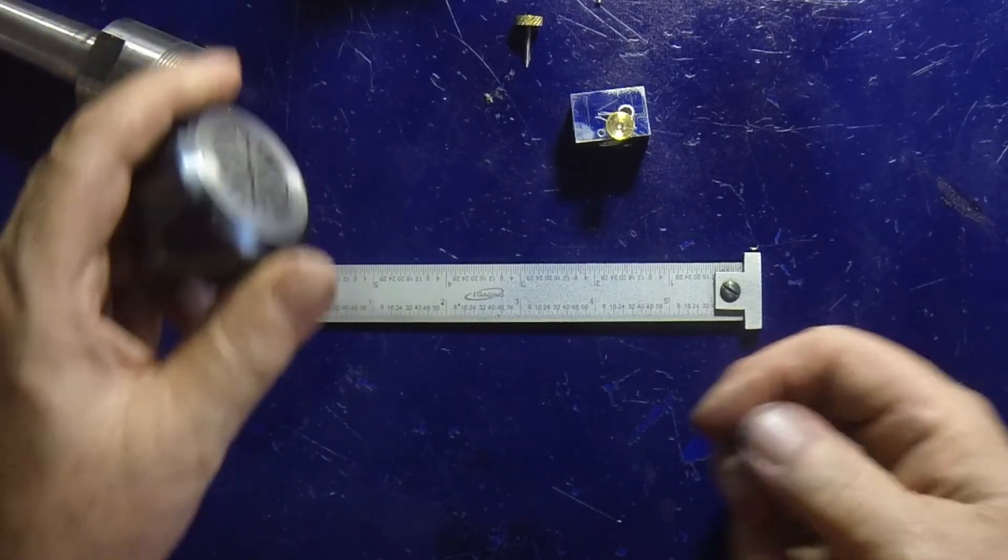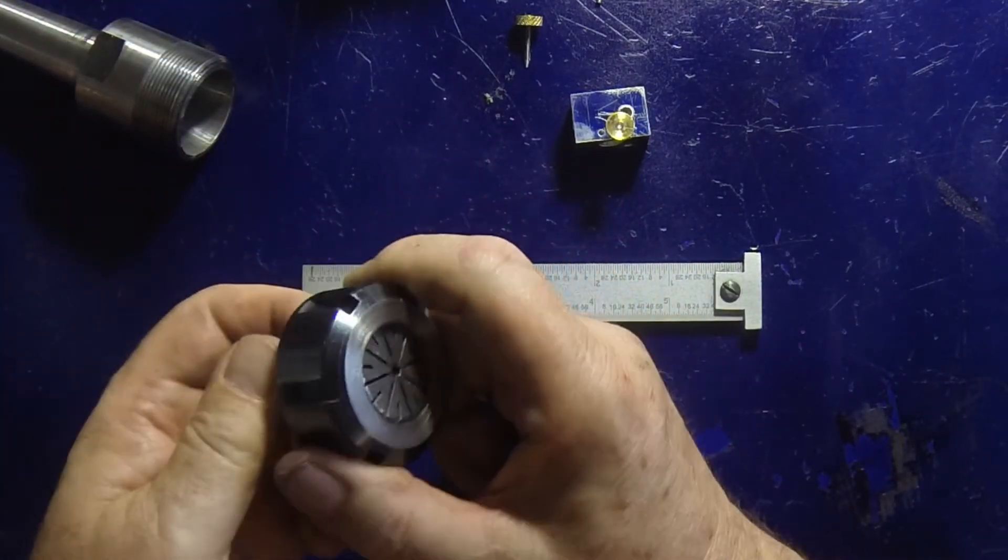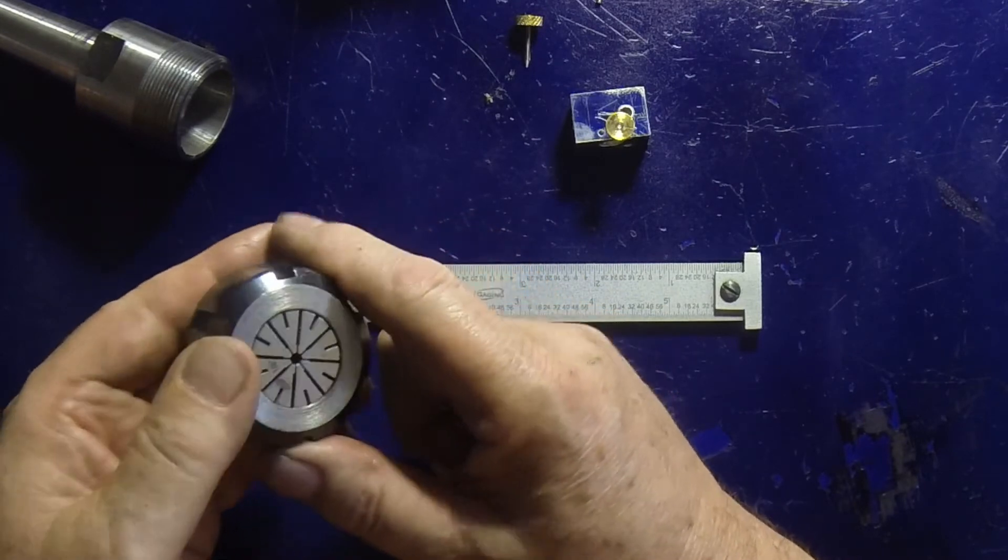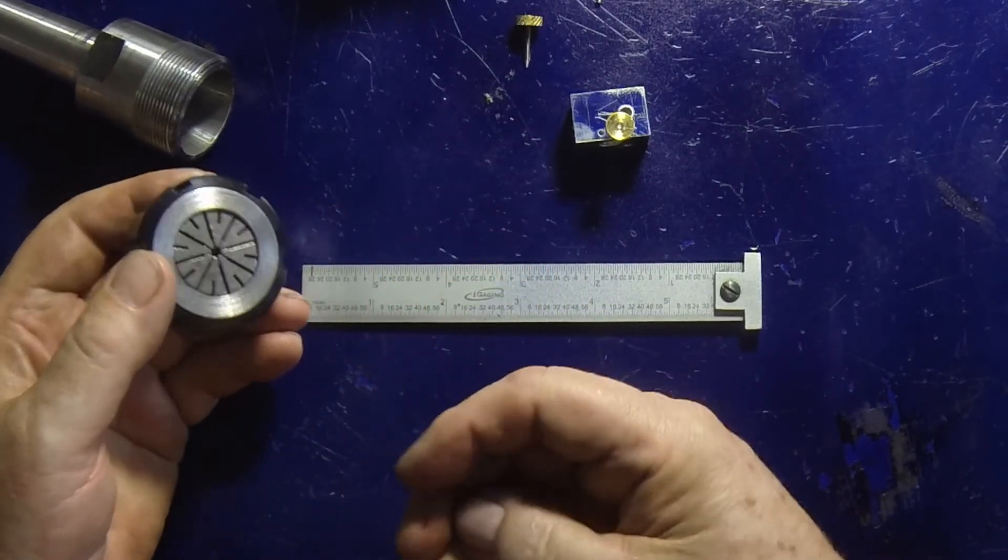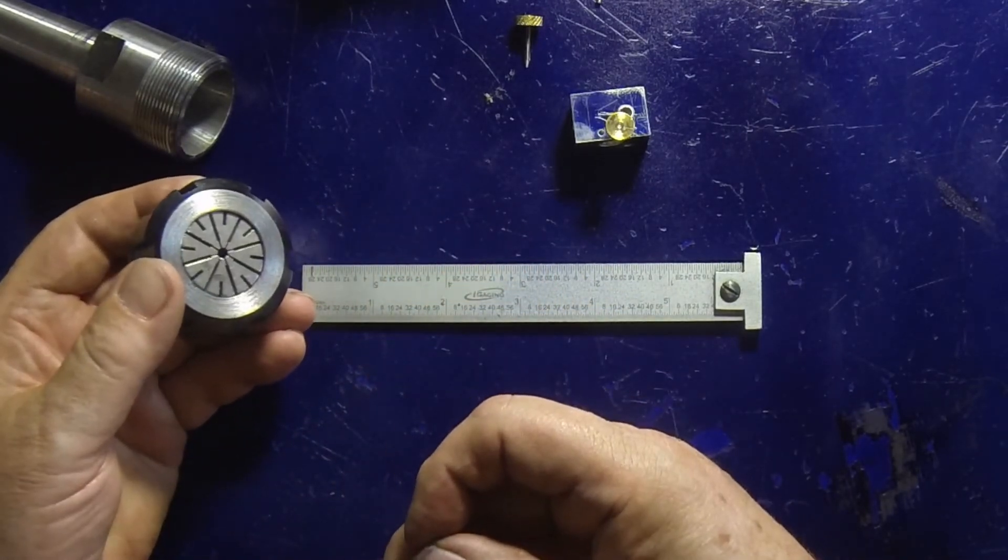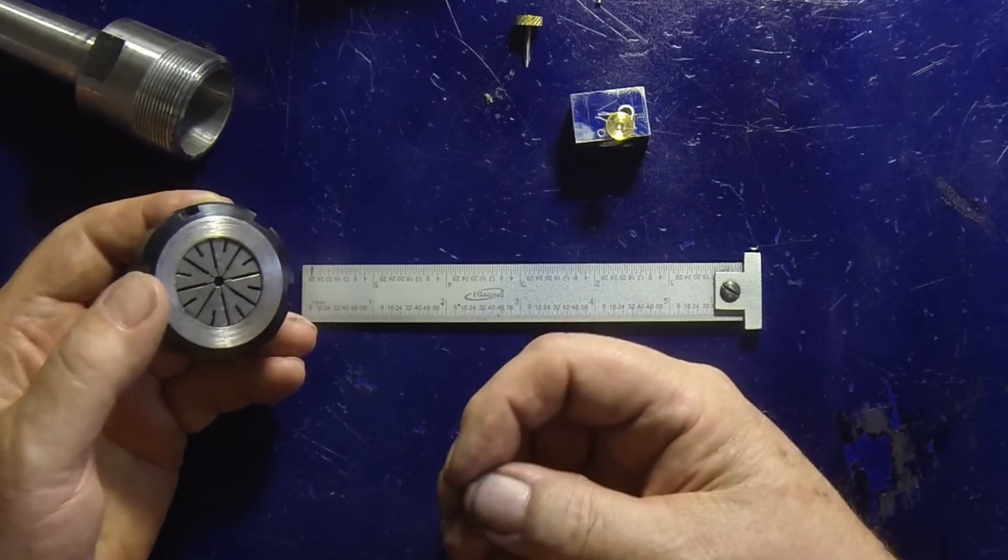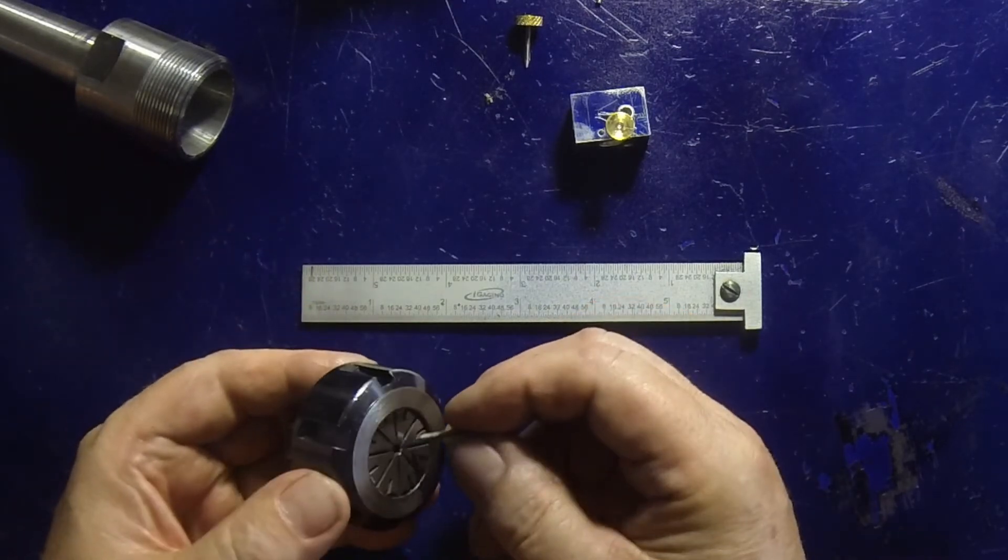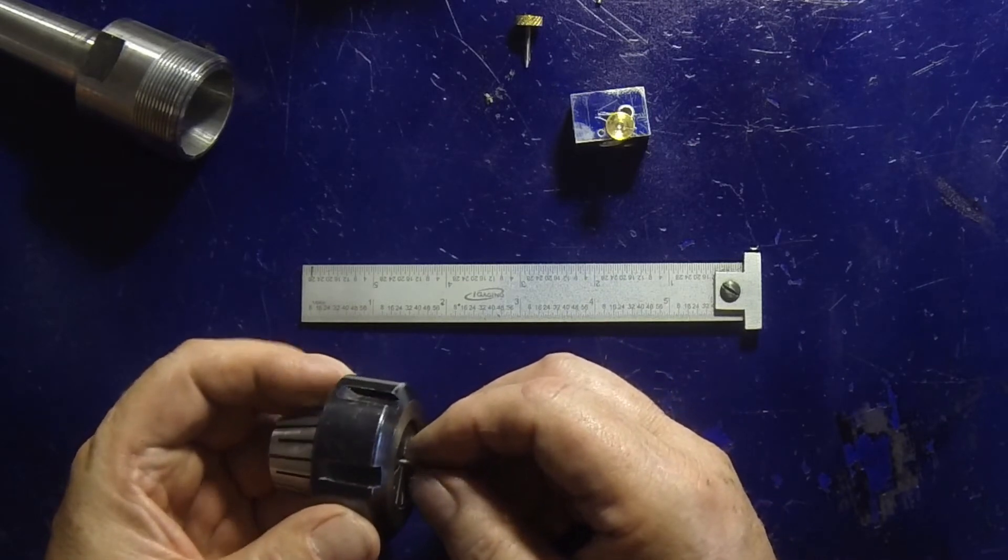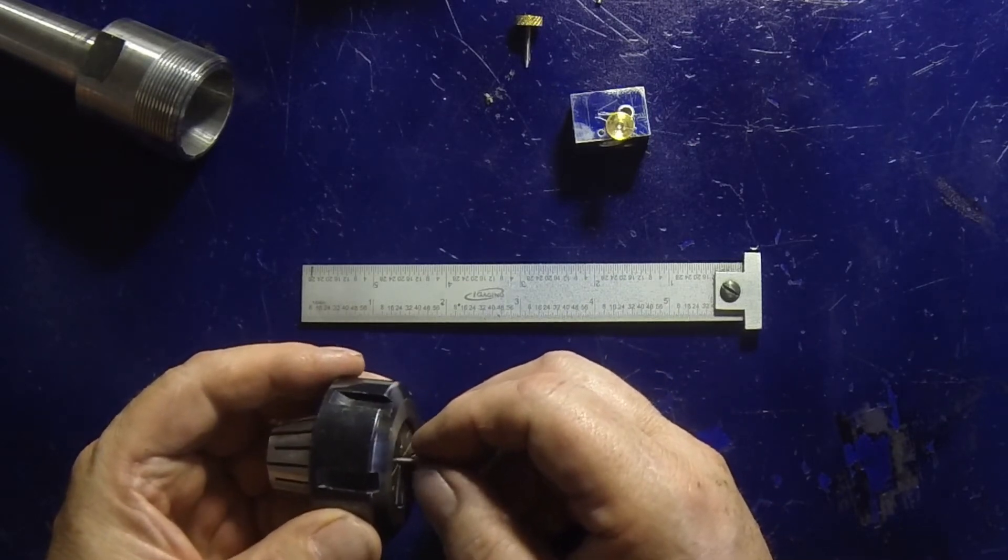So this is the ER32 collet. This is a 1/16th collet, which is the smallest I had, but a 2-56 screw will tighten up in there. It takes a little while to get it tight, but it will tighten up.